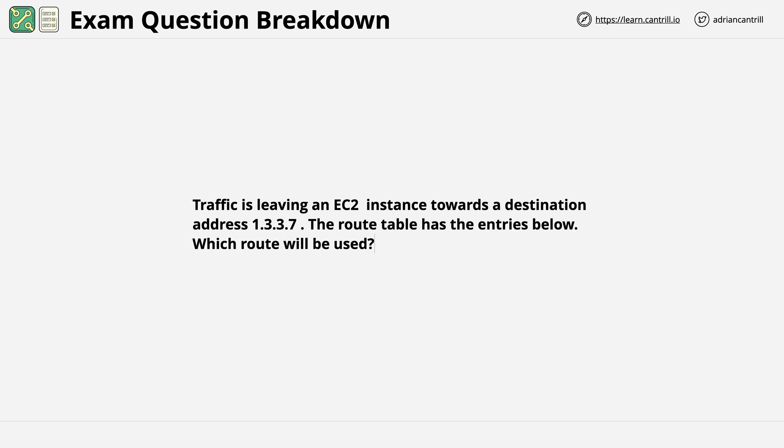Now, I want to start by presenting the sample exam question. The question is: traffic is leaving an EC2 instance towards a destination address 1.3.3.7. The route table has the entries below. Which route will be used?